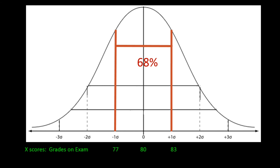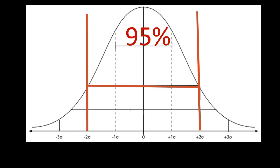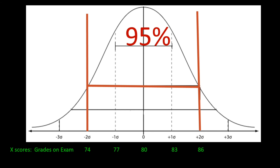What about two standard deviations from the mean? The empirical rule says that approximately 95% of data values will be within two standard deviations of the mean. Since the standard deviation is three points, two standard deviations is six points. So 80 minus six is 74 and 80 plus six is 86. According to the empirical rule, 95% of the class scored between a 74 and an 86.